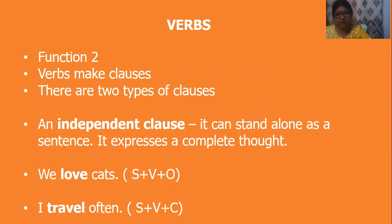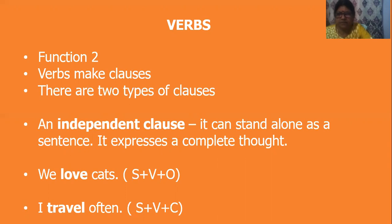There are two types of verb clauses. This is important. The first type is an independent clause. The clause can stand alone as a sentence and it expresses a complete thought. For example, 'We love cats' — 'love' is the verb, 'we' is the subject, 'cats' is the object. It gives a complete thought. 'I travel often' — here you have a subject, verb and a complement.